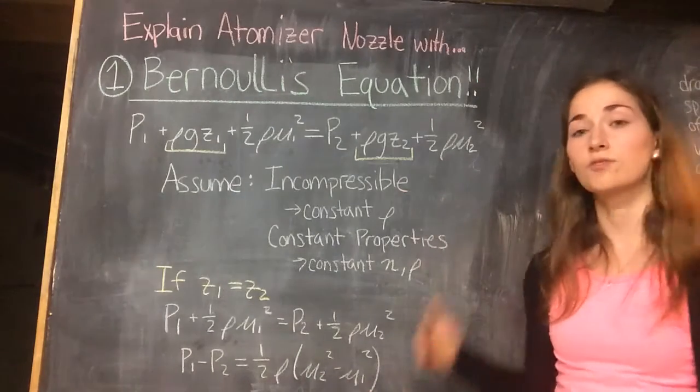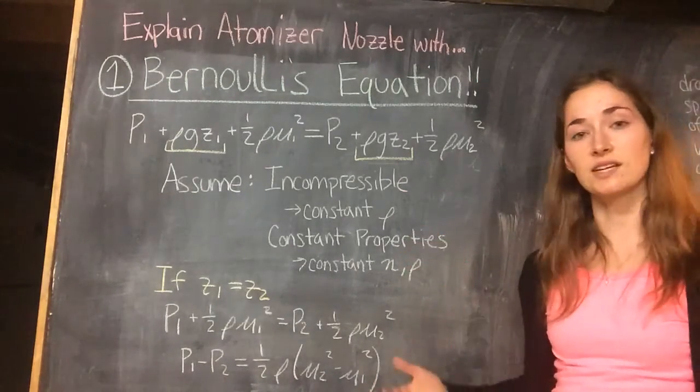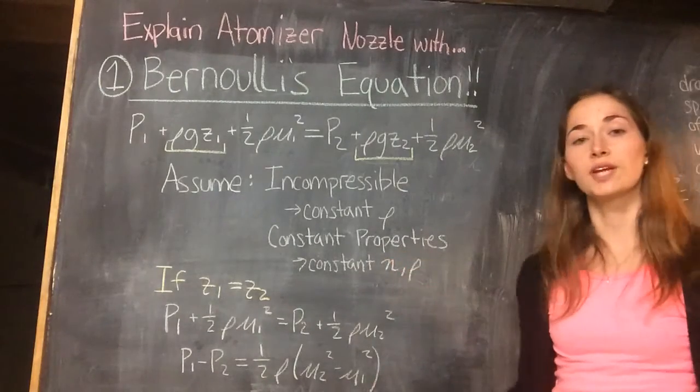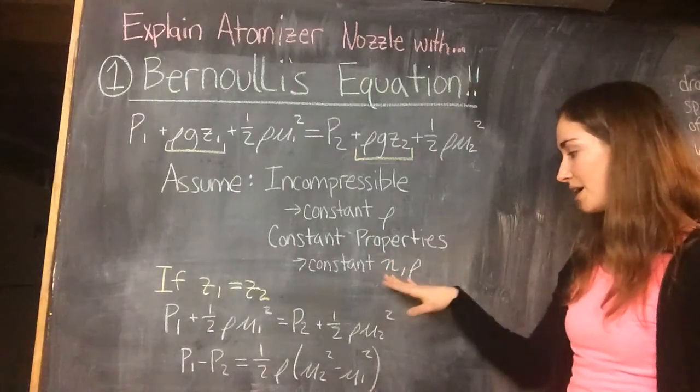First, we assume that the fluid is incompressible, that density is constant. We also assume that the fluid has constant properties, which the viscosity, eta, and density are constant.